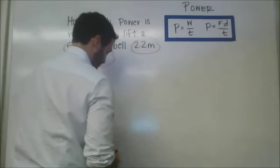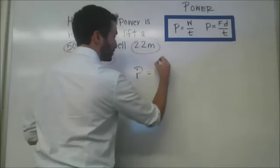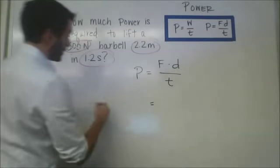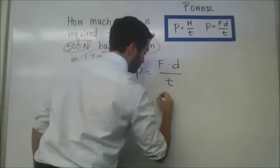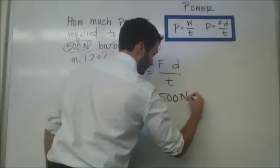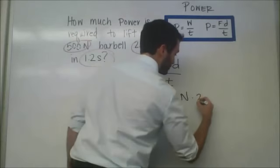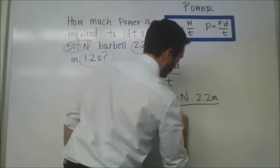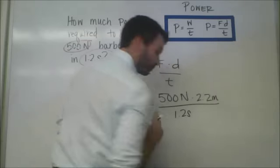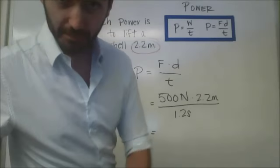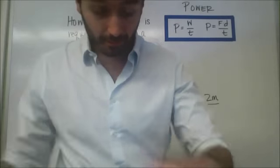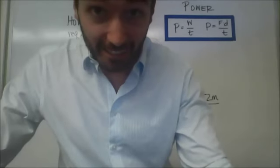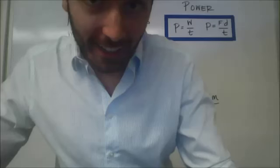If power is equal to force times distance divided by time, then we have a force of 500 newtons, a distance of 2.2 meters, and a time of 1.2 seconds. Plug that into your calculators — the answer is 917 watts.